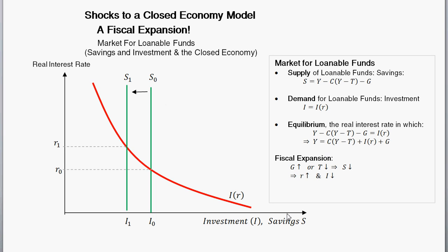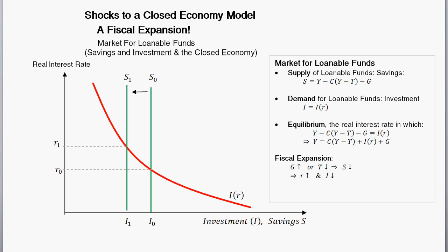So the answer is: a fiscal expansion — either an increase in government spending or a decrease in taxes — shifts in the savings schedule, raises the real interest rate, and decreases investment. Intuitively, the government needs to borrow money from the open market to increase spending, which reduces the supply of loanable funds available, drives up the real interest rate, and reduces private investment. We call this crowding out — when government action reduces savings and crowds out investment.